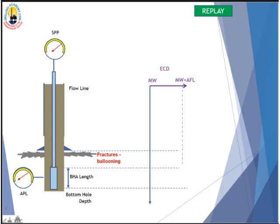Now let's take a closer look at ECD. ECD stands for Equivalent Circulating Density. It equates mud weight plus annular friction loss, AFL. So it ranges between mud weight and mud weight plus AFL. The highest AFL is at the BHA range.